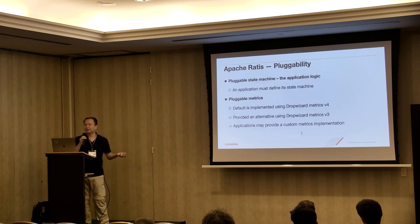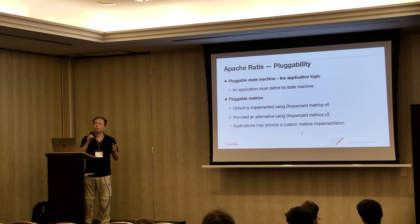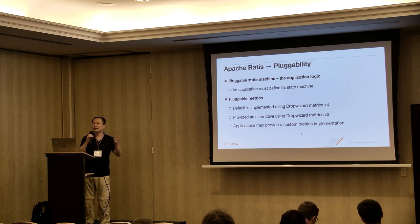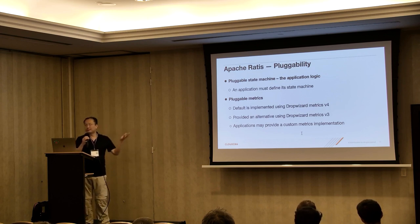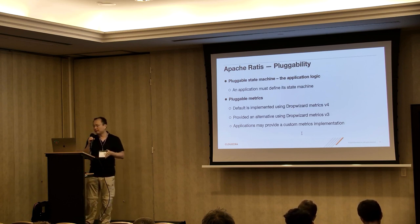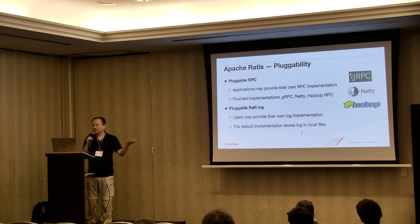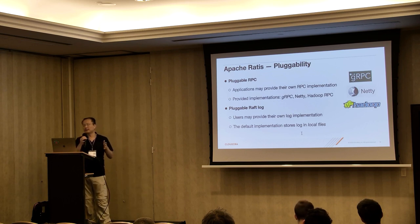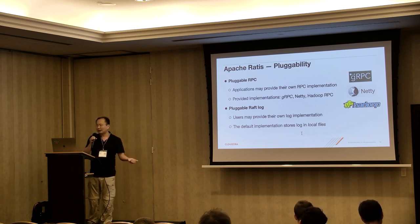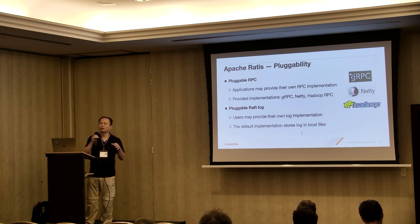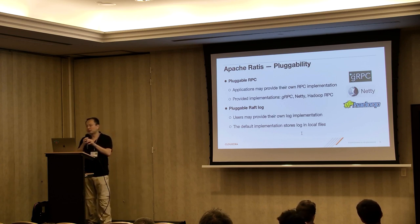Apache Ratis is highly pluggable. We have a pluggable state machine — the application must define its own state machine with its application logic. Because Ratis is a library, we don't want to force other applications to use specific libraries for things like metrics. So we support pluggable metrics — we support Dropwizard metrics and also Prometheus, and applications can also provide their own metrics implementation. We also support pluggable RPC: by default we use gRPC, which has most features, and we also support Netty and Hadoop RPC. We support a pluggable WAF log: by default you write the log to a local file, and we also have an option for writing the log to memory for testing. Users can also provide their own log implementation.